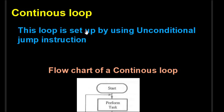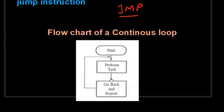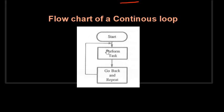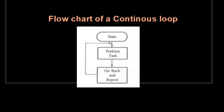A continuous loop is set up by using an unconditional jump instruction. In the 8085 microprocessor there is only one unconditional jump, which is the JMP instruction. This particular continuous loop runs forever — sometimes we need to run a program forever, and for that purpose we use this continuous loop. It will never stop unless we shut down the system itself.